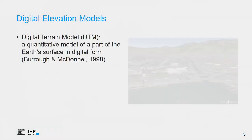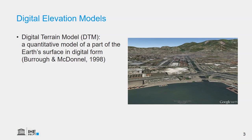Digital elevation models can be defined as DTMs — digital terrain models — where we only consider the terrain surface. This is often used in catchment hydrology, where we want to route water over the terrain in the catchment.